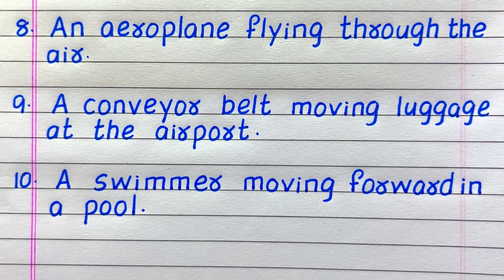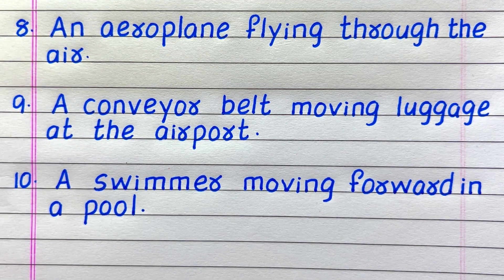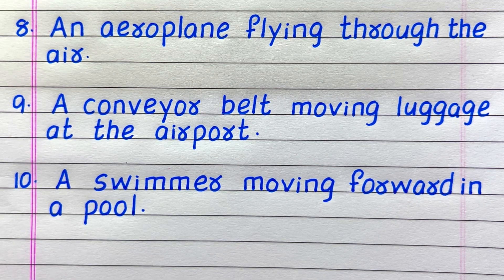Eighth example of translatory motion is an airplane flying through the air. Ninth, a conveyor belt moving luggage at the airport. Tenth, a swimmer moving forward in a pool.